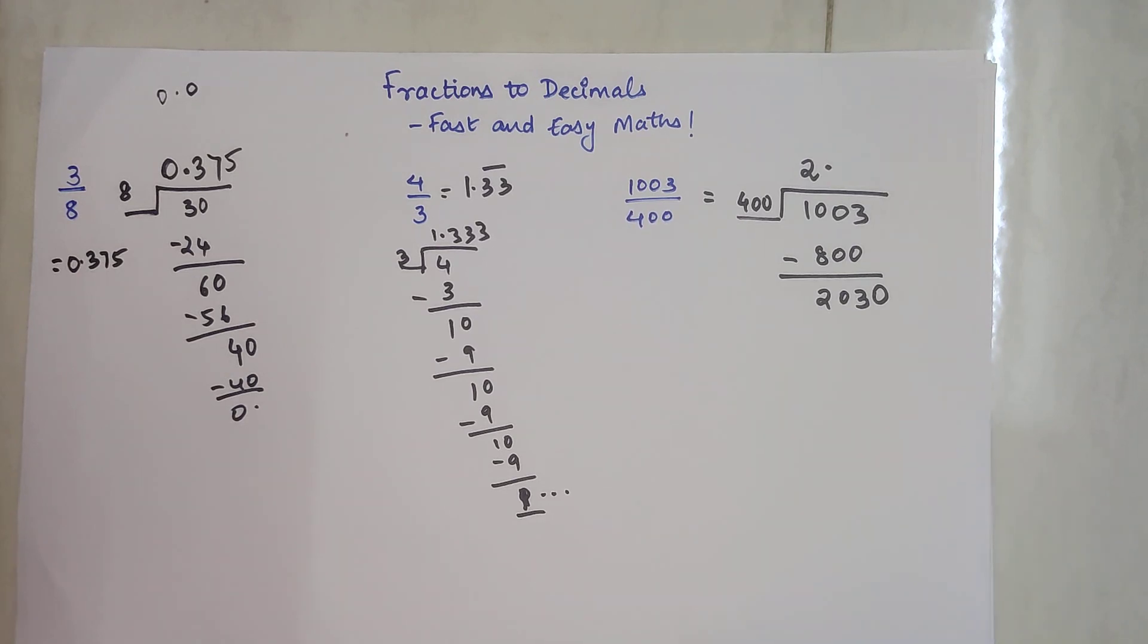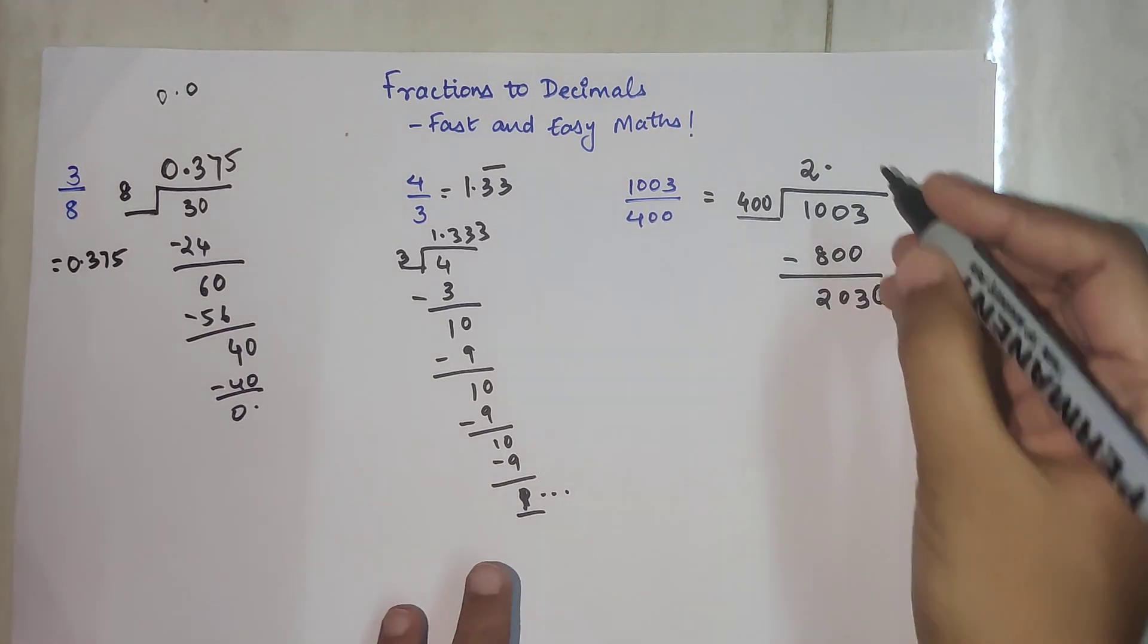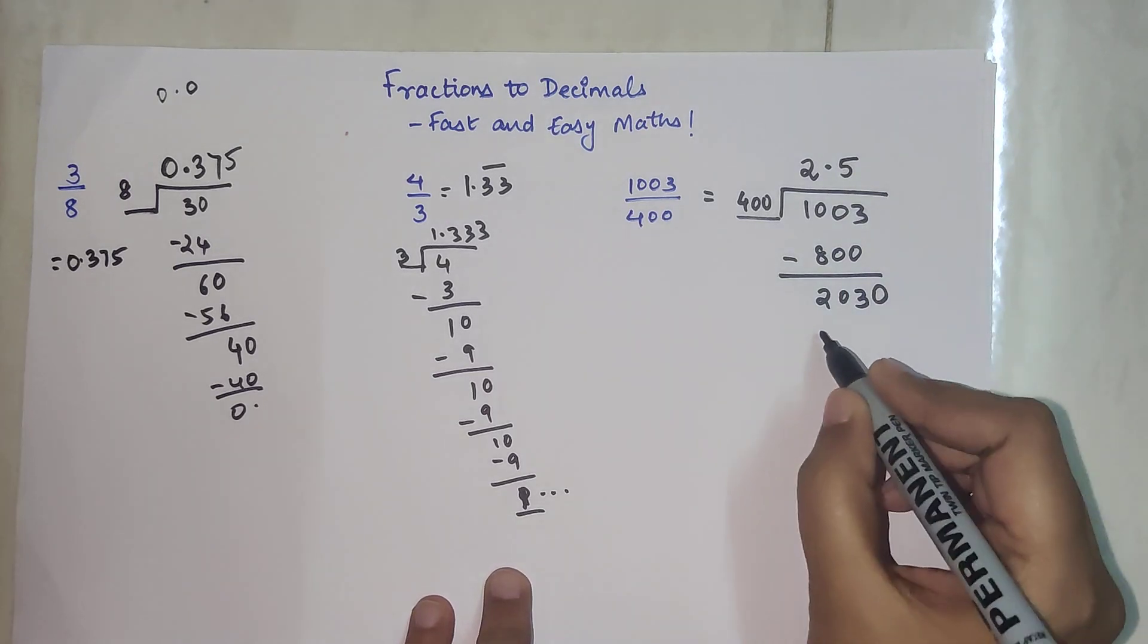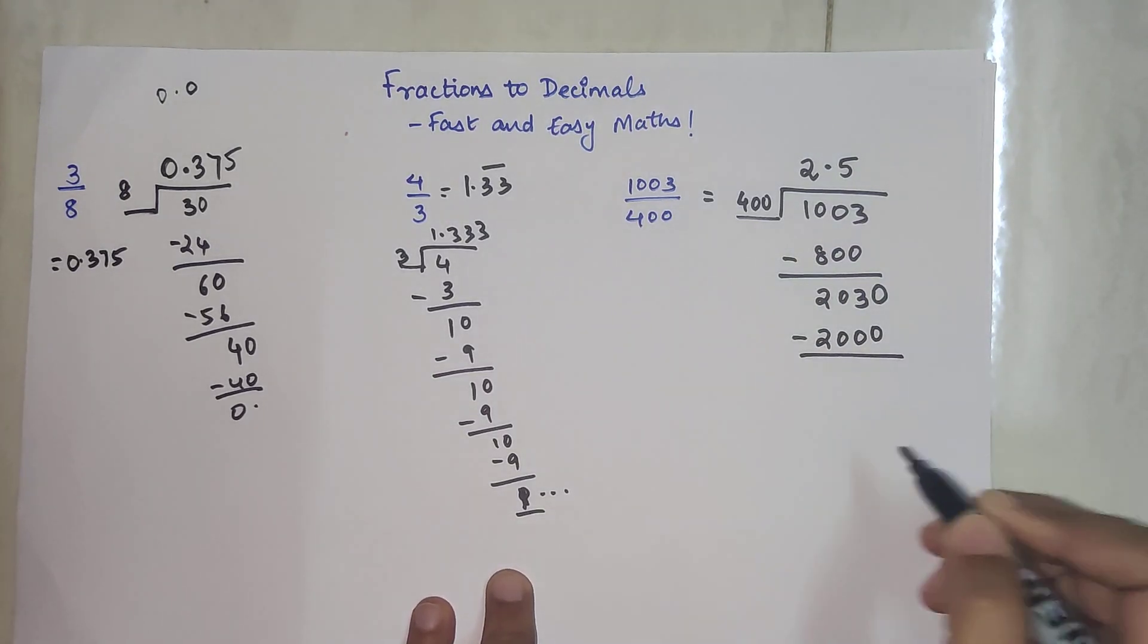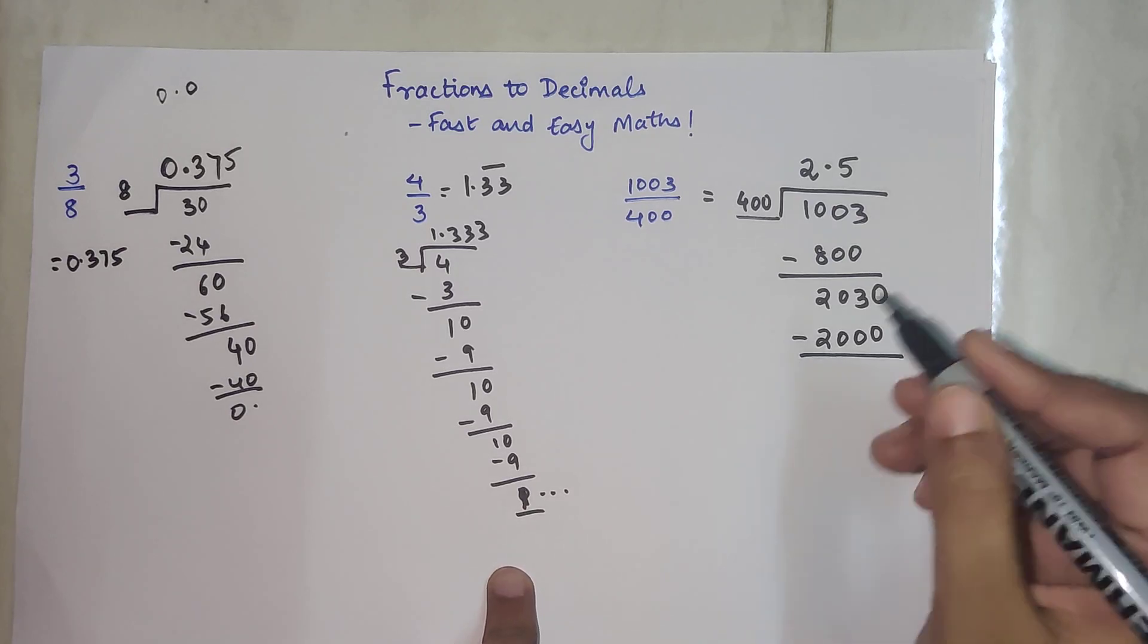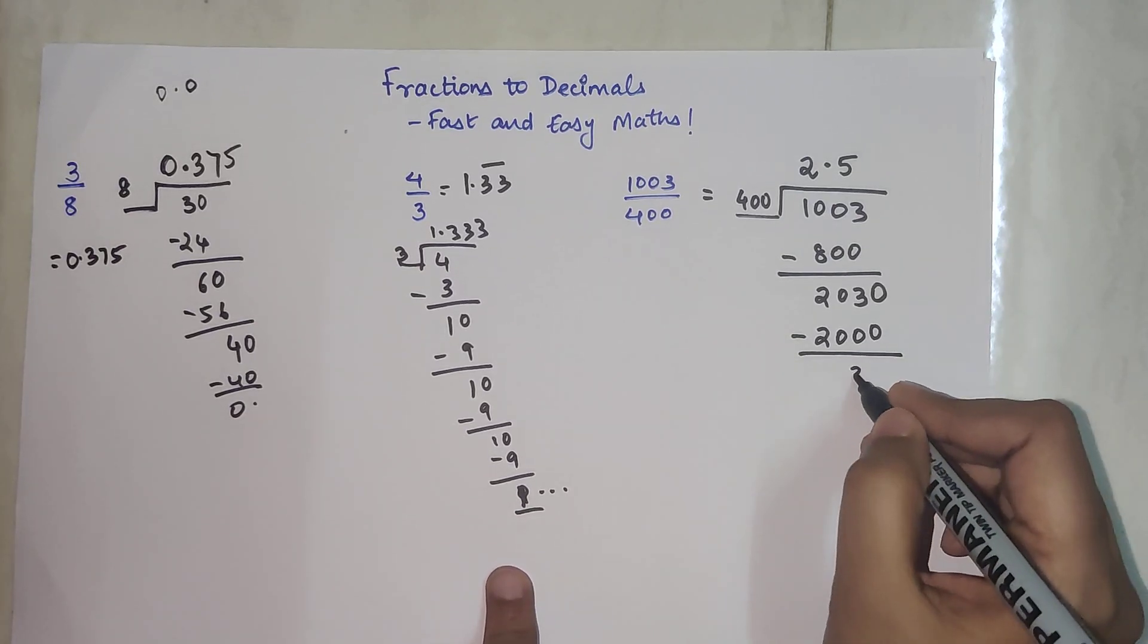So now 4 into 3 was 1200. 4 into 6, so 400 into 4 will get you 1600. 400 into 5 will get you 2000. So that is very close to 2030. So I'm going to subtract 2000 from 2030. We're getting 30 now.